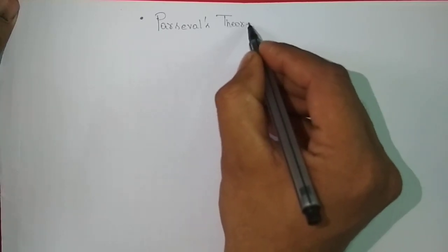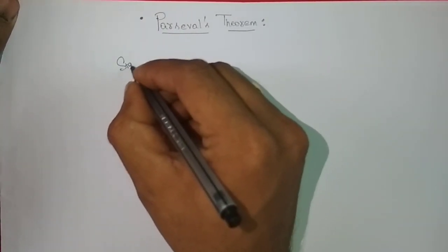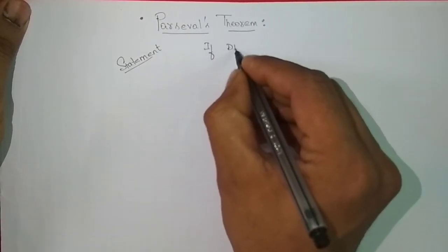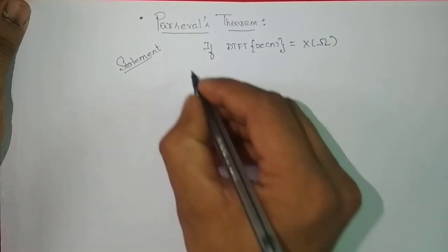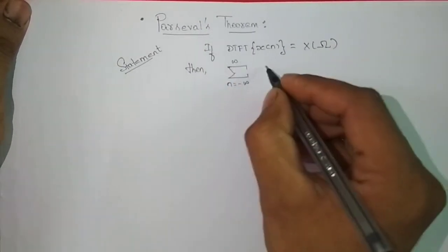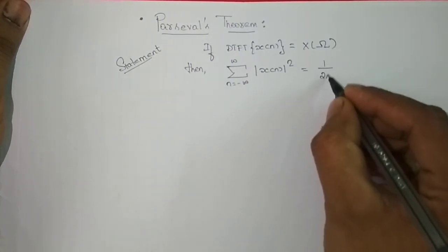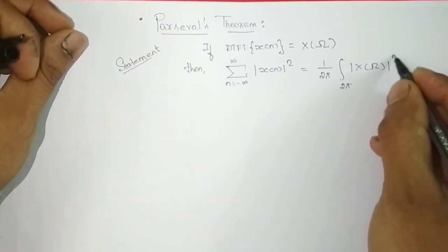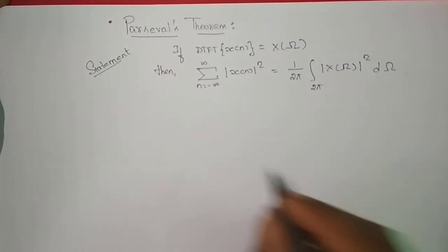We will prove Parseval's Theorem. Parseval's Theorem states that if DTFT of x(n) is equal to X(ω), then the summation from n equals minus infinity to infinity of the magnitude squared of x(n) is equal to 1 over 2π, integrating over one period of 2π, of the magnitude squared of X(ω) dω.